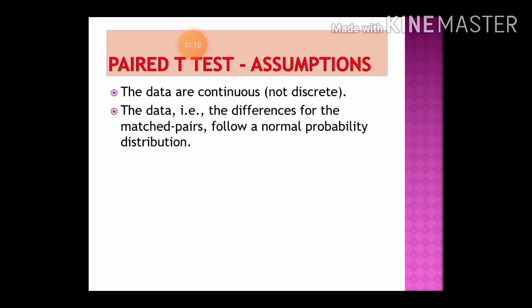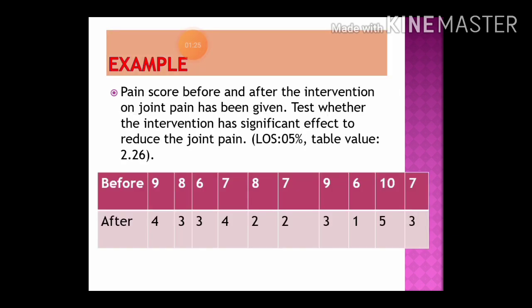The paired t-test is done under the following assumptions: data are continuous and the data should follow a normal probability distribution. Because of these assumptions, the paired t-test is a parametric test.